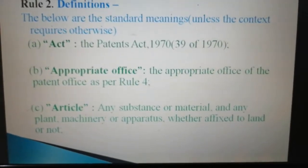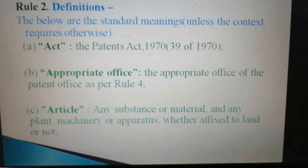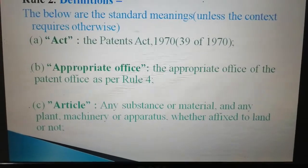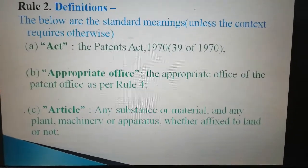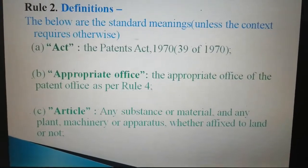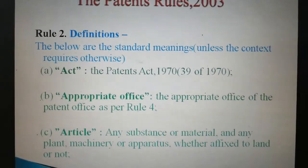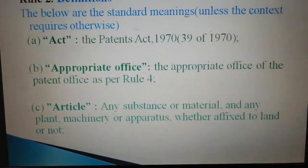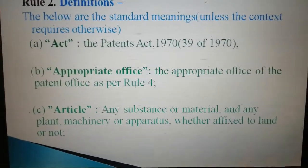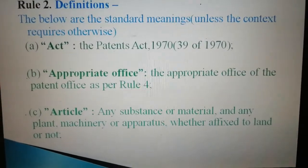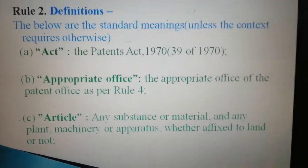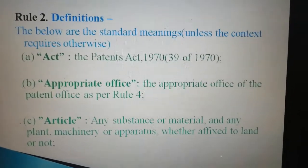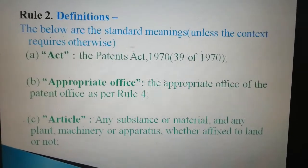Clause B says 'Appropriate Office' — this means the appropriate office of the patent office as per Rule 4 of the Patents Rules 2003. Then Clause C says 'Article' — any substance or material and any plant, machinery or apparatus whether affixed to land or not. This is 'Article'.